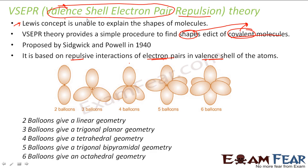This is made clear with the balloon analogy. If you have two balloons of the same size and bind them, they take a linear shape. Three balloons form a trigonal planar shape. Four balloons take a tetrahedral shape. Five balloons form a trigonal bipyramidal shape. Six balloons take an octahedral shape — that is the natural shape of six equal-sized balloons.